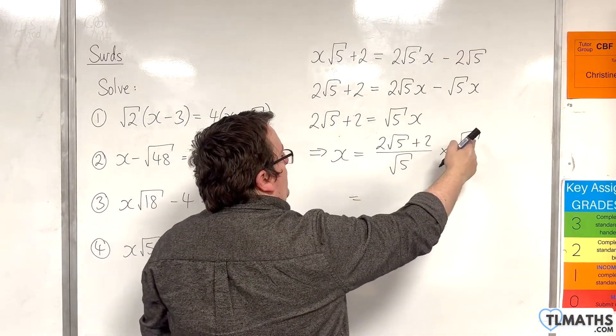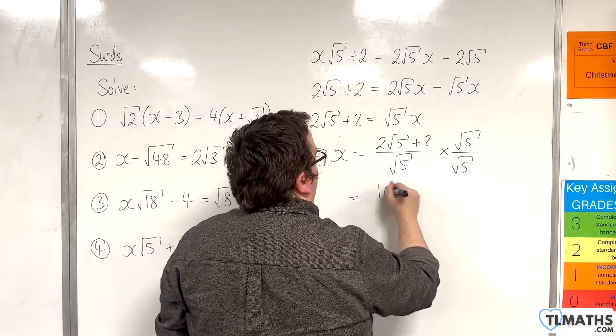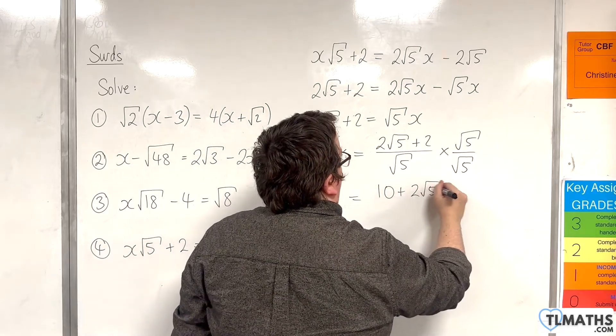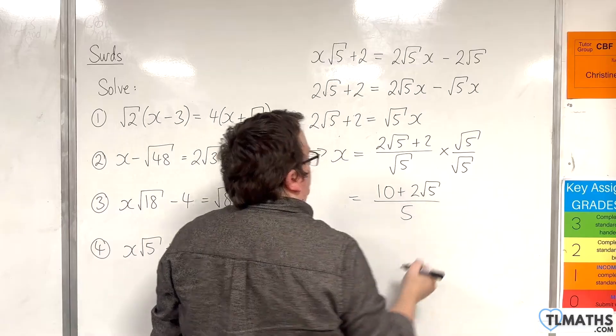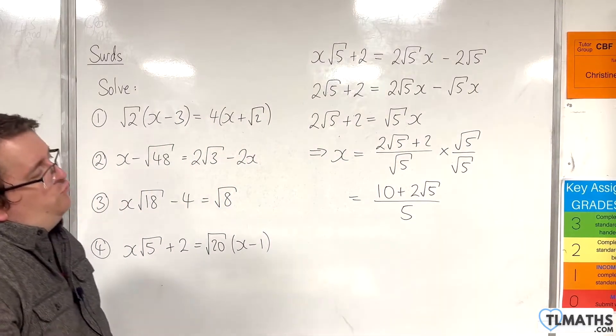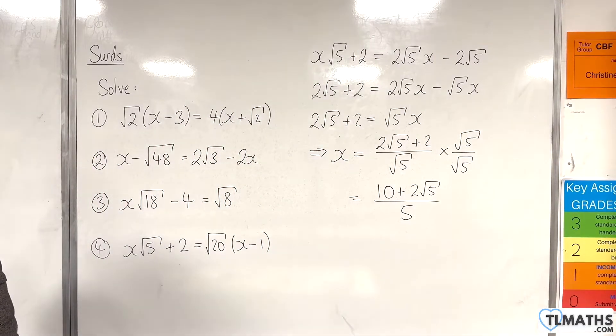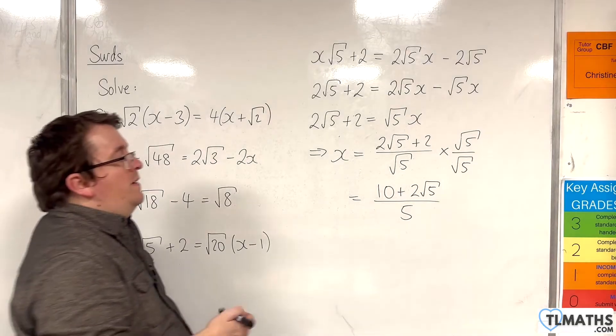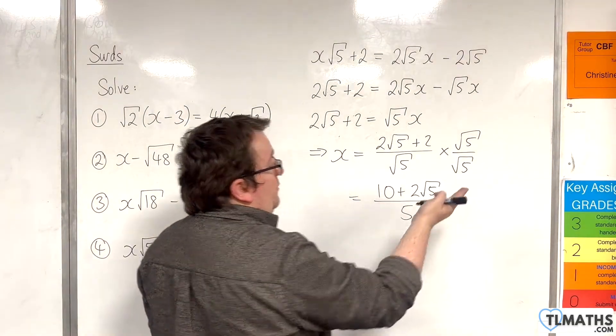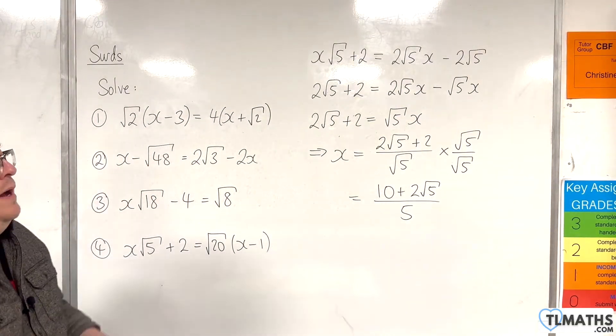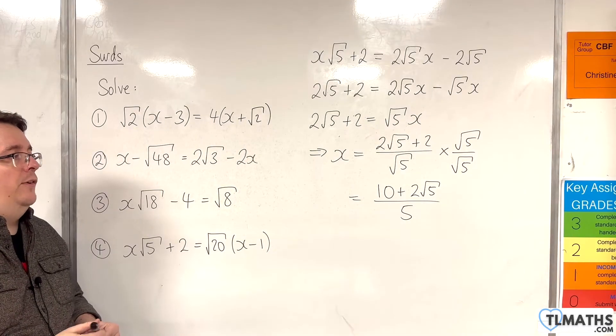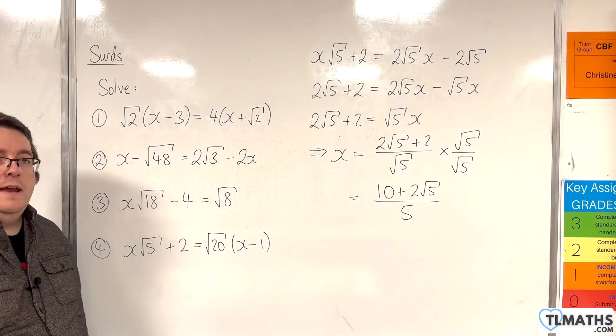We'll get 2 root 5 times root 5, which is 2 times 5, so 10. Plus 2 root 5 over 5. And that's really as far as I can go with that one. I mean, you could write that as 2 plus 2 fifths root 5 if you like, but you wouldn't need to. That's as simplified form as you can get it.